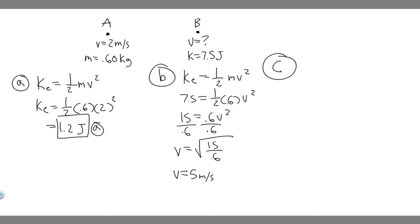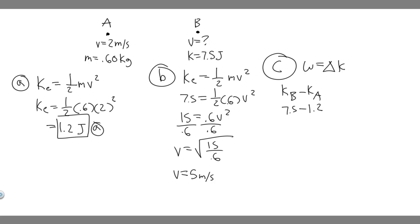For C, we need the total work done on the particle as it moves from A to B. Work equals the change in kinetic energy. We know the KE at A is 1.2 joules and at B is 7.5 joules, so we just subtract: W = KE_B − KE_A = 7.5 − 1.2 = 6.3 joules. So the total work done is 6.3 joules.